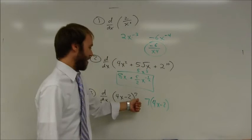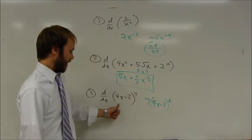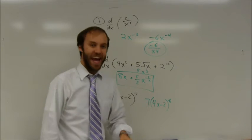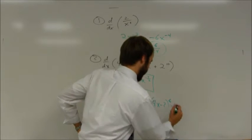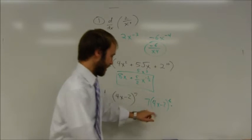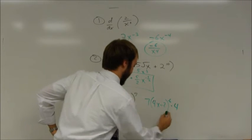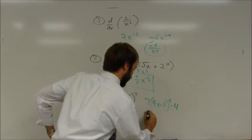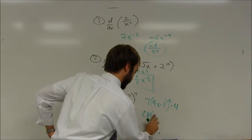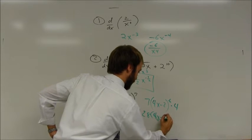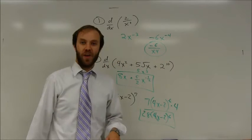It's 7 times the same thing that I had before — 4x minus 2 — and I drop my power by 1. All I did was multiply and drop my exponent by 1, and now I have that inside function. I have to multiply by the derivative of that inside function, which is just going to be 4. You could do a bit of simplifying here — I would multiply the 7 and the 4 and write that as 28 times the quantity 4x minus 2 raised to the sixth power.